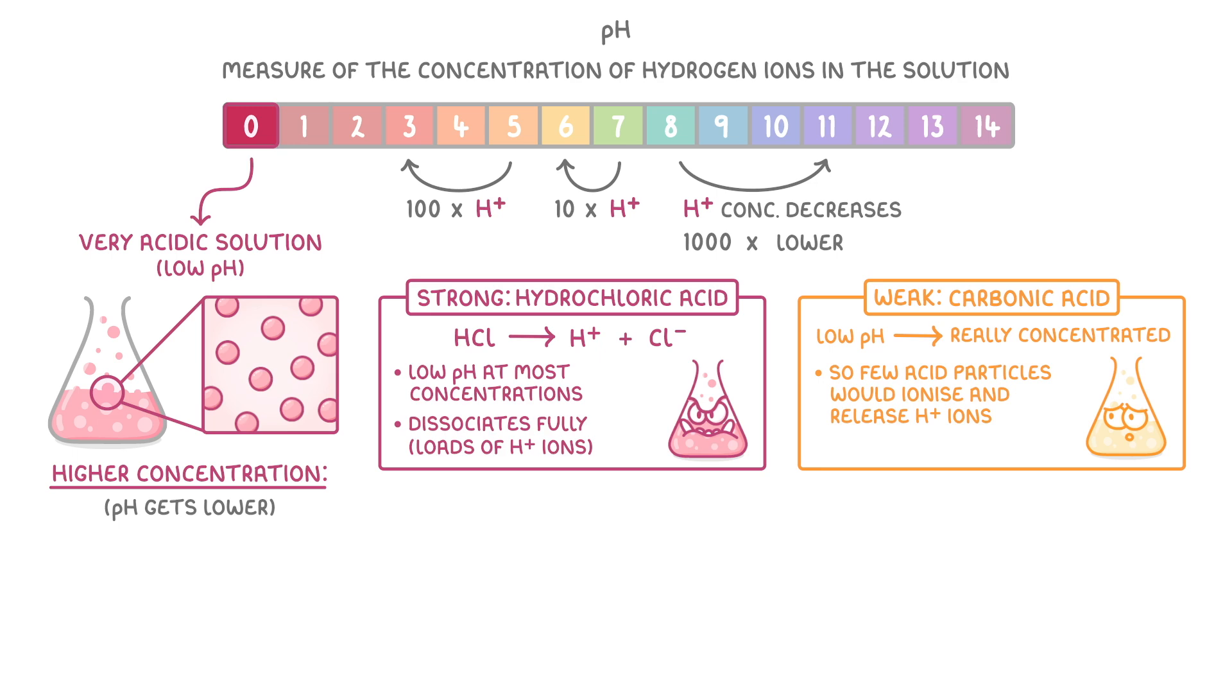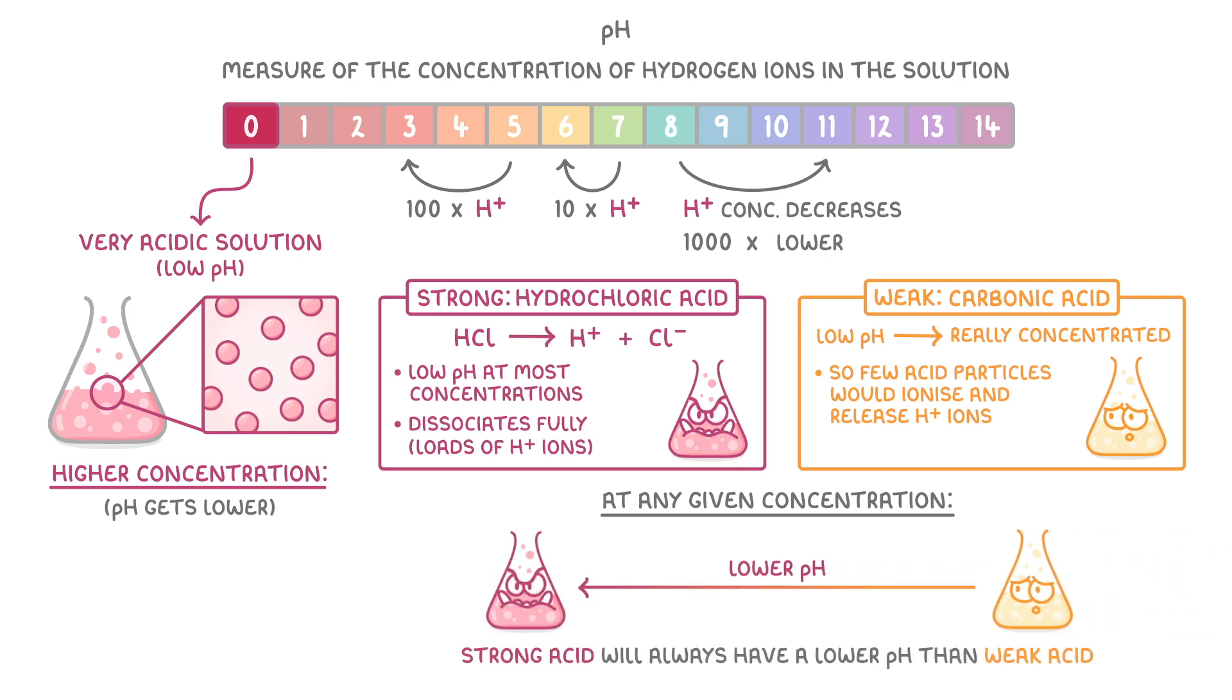Another way of putting this concept is that at any given concentration, a strong acid will always have a lower pH than a weak acid, because a higher proportion of the strong acid molecules would dissociate to release their hydrogen ions, and it's only the concentration of hydrogen ions that determines the pH.